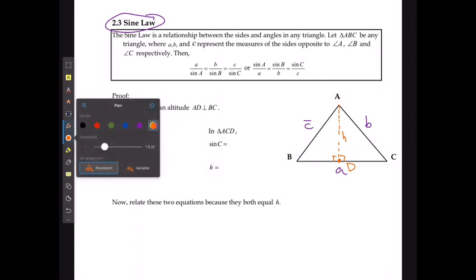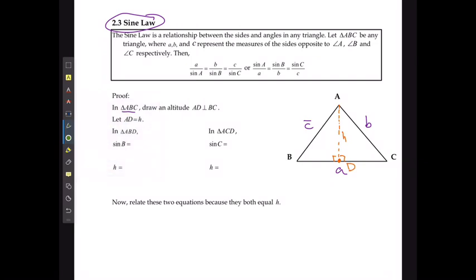So if I'm using the sine ratio from the triangle on the left, then I'm going to say sine B would be the same as H over side length C. That means that H, when I isolate it, is going to be side length C multiplied by sine of angle B.